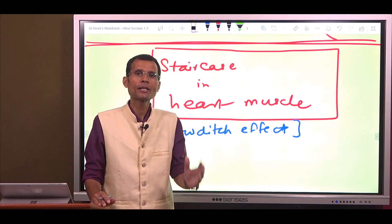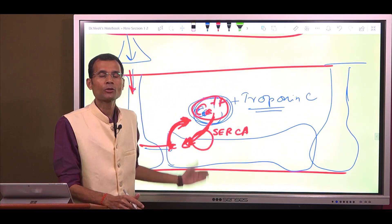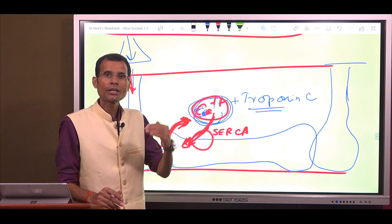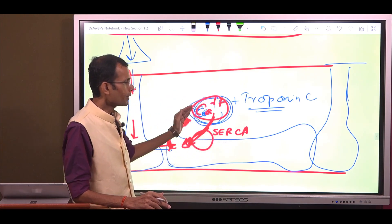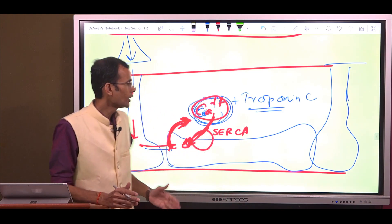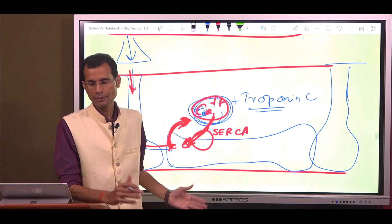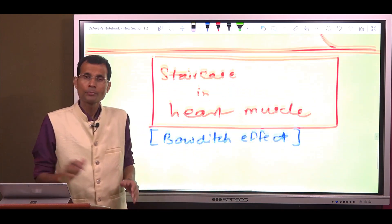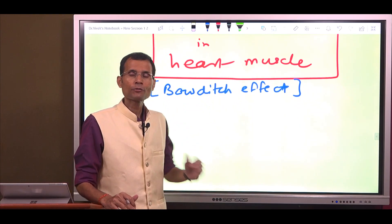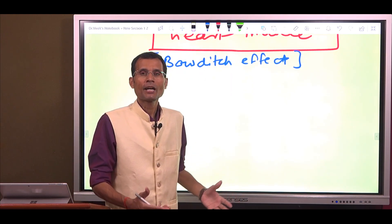Increasing frequency of stimulation to the muscle causes increased availability of sarcoplasmic calcium, and greater the amount of calcium available in the sarcoplasm, stronger would be the muscle contraction. That was the basis for the staircase effect in skeletal muscle. The same concept applies in the case of heart muscle as well, but with some caveats.